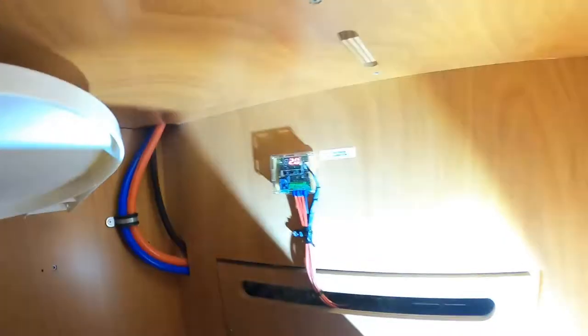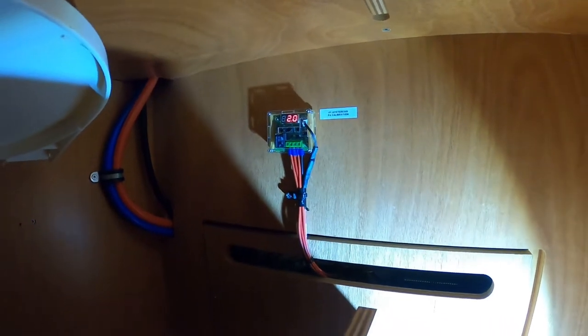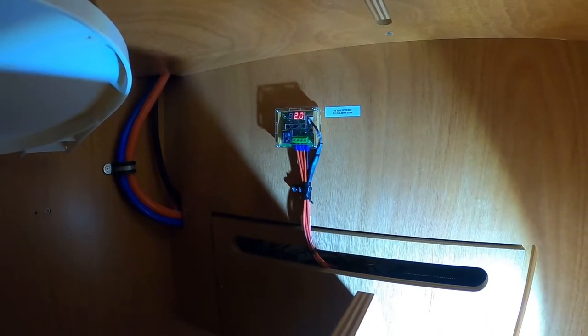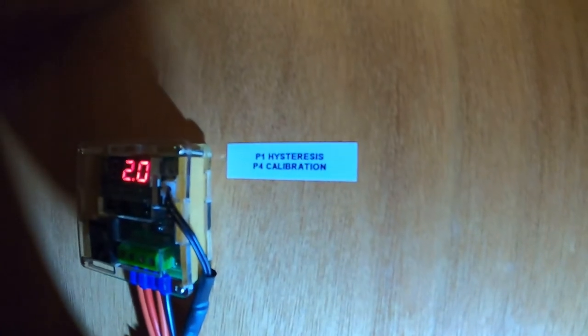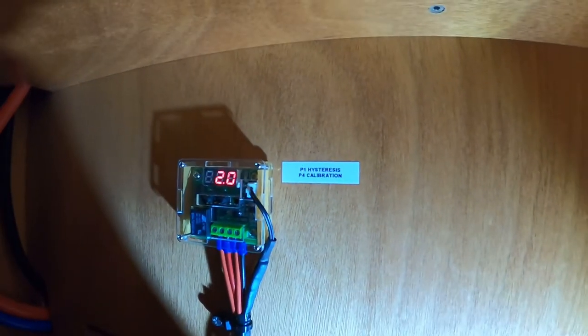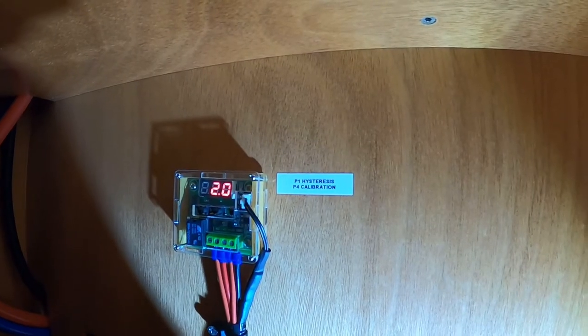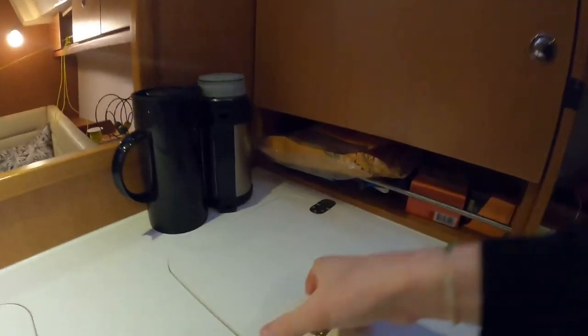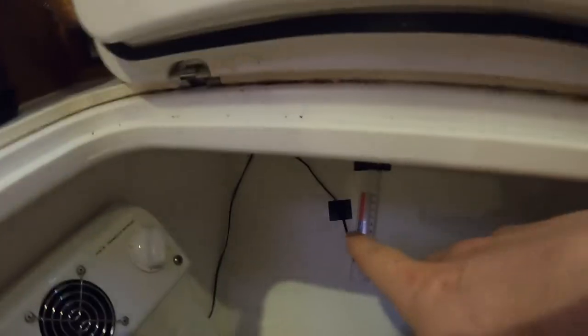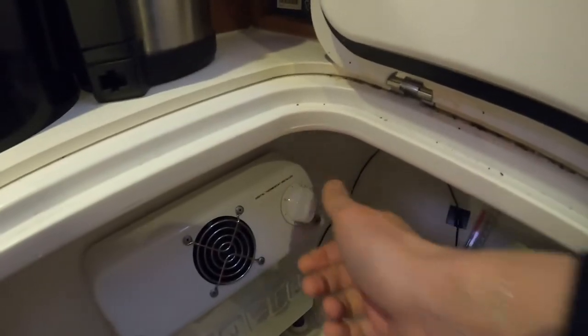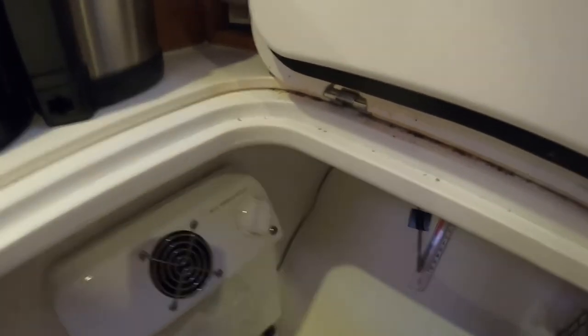Alright guys the project is done. Dirt cheap thermostat is installed and I've been testing it now. It works really well. You can go to programming 1 to change the hysteresis. That means in and out and how much tolerance and then P4 is calibration. This works really well and now I'm just experimenting with finding a good location for the probe. This is out of commission and the job is well done.